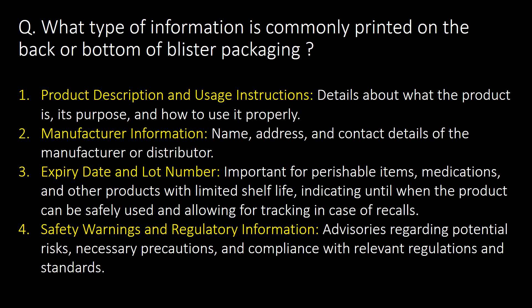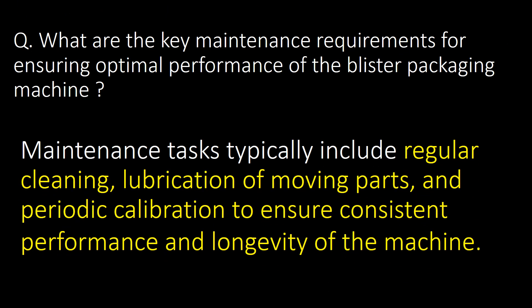What type of information is commonly printed on the back or bottom of blister packaging? Product description and usage instructions, manufacturer information, expiry date and lot number, and safety warnings and regulatory information are commonly printed on the back or bottom of blister packaging. Maintenance tasks typically include regular cleaning, lubrication of moving parts, and periodic calibration to ensure consistent performance and longevity of the machine.